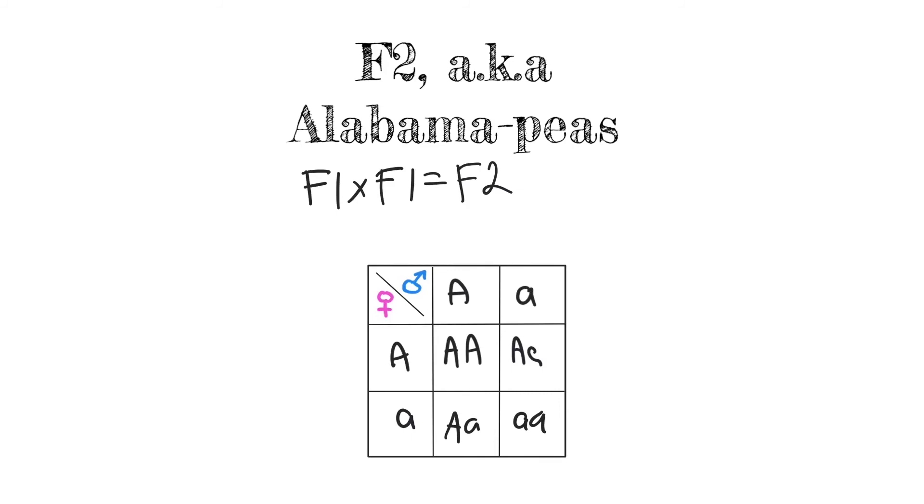So let's see what we have. We have one, two, three. So three violet flowers and just one that is white. This is the ratio of three to one that Mendel observed in his research.